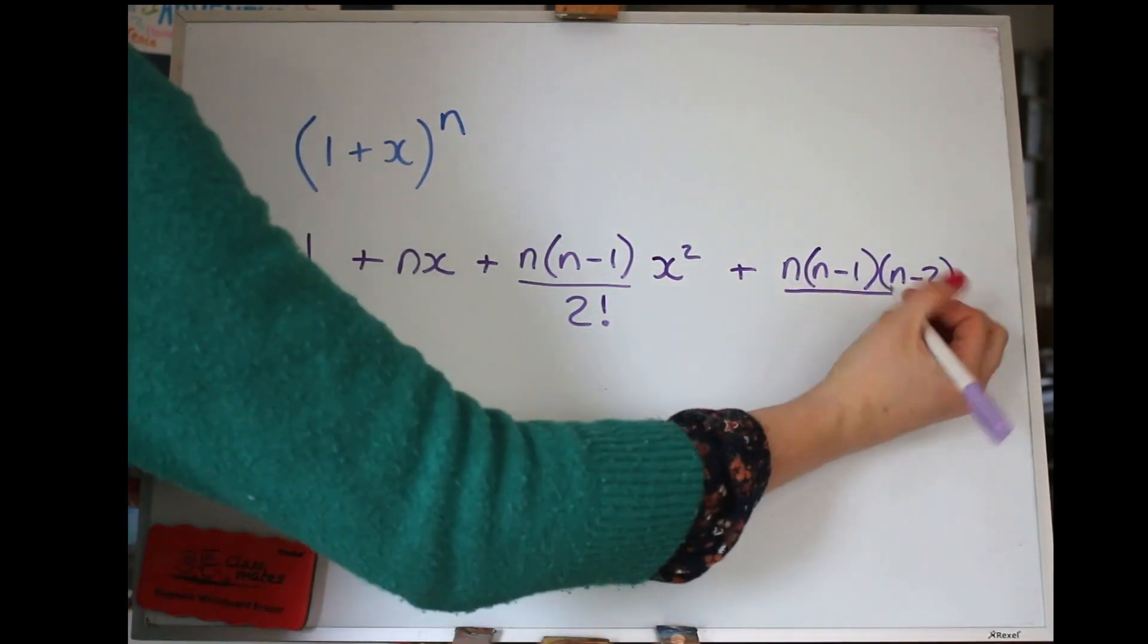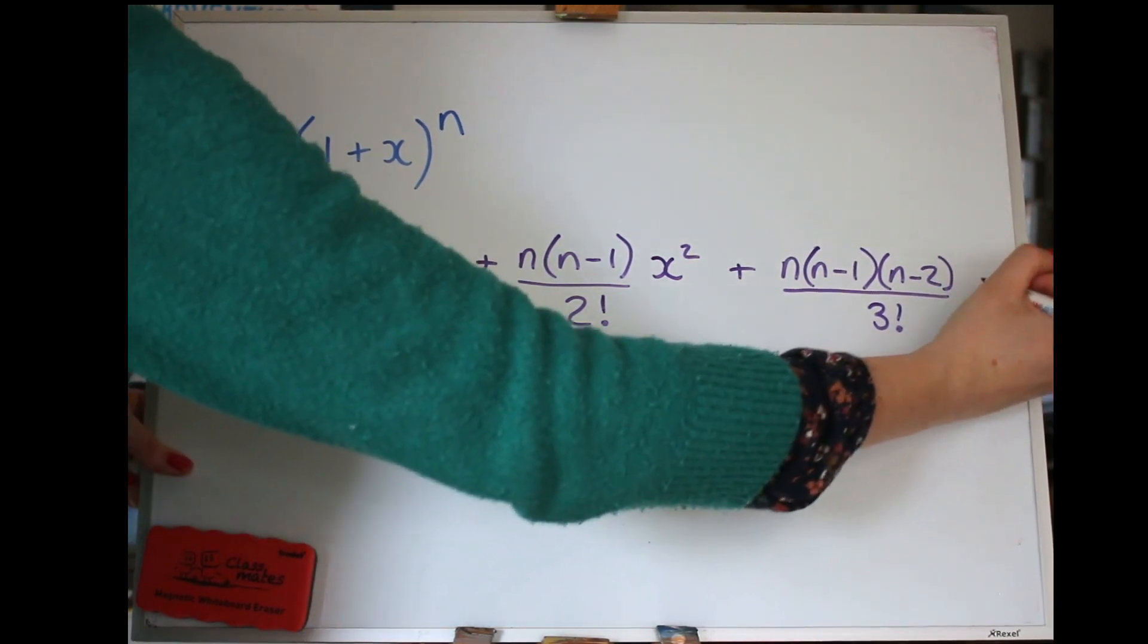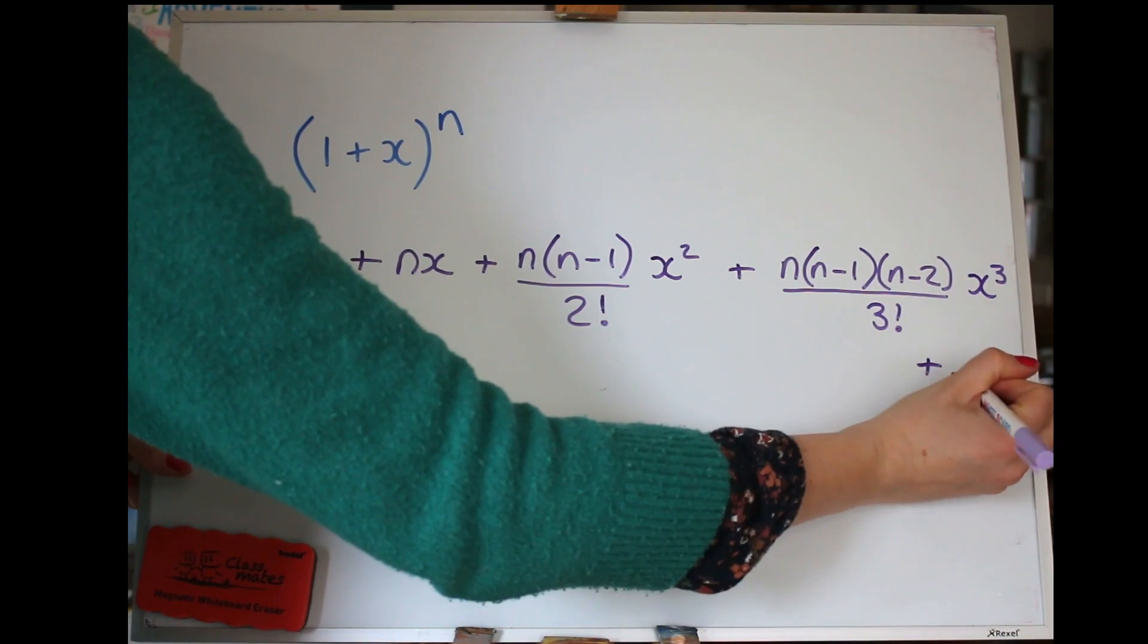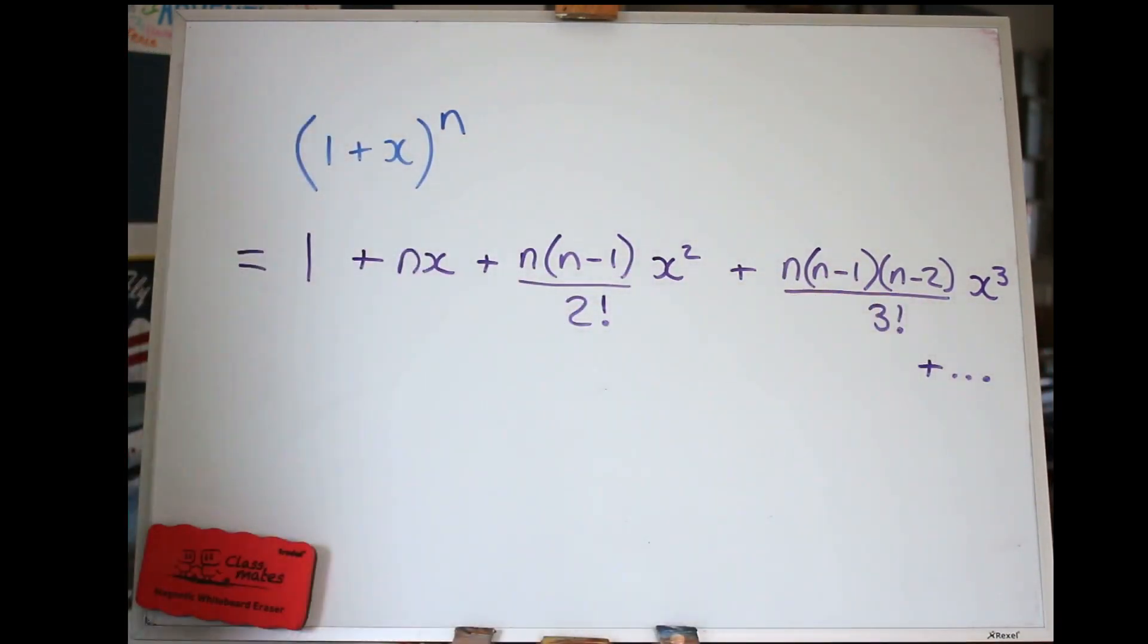And instead of 2 factorial, it's now going to be 3 factorial, so that's 3 times 2 times 1, and X cubed this time. And I'll just put a plus dot dot dot because, as I said, it's an infinite expansion, so you'll never be asked to do more than the first few terms.